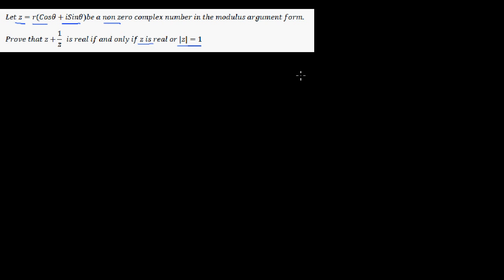This is a question on complex numbers — an excellence question at NC level 3. The question is: let Z = R cosθ + i sinθ be a nonzero complex number in modulus-argument form. Prove that Z + 1/Z is real if and only if Z is real or the modulus of Z is 1.